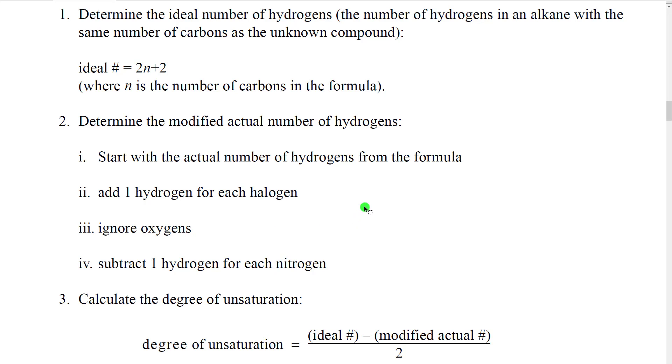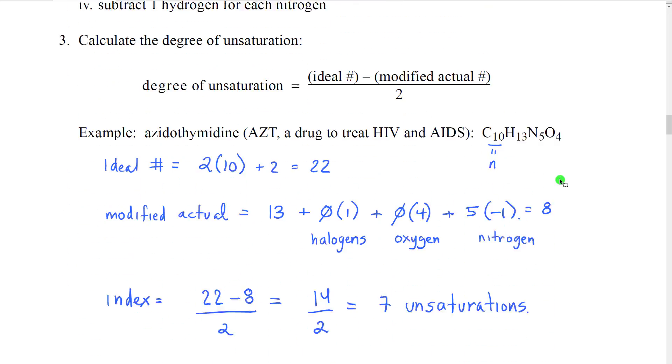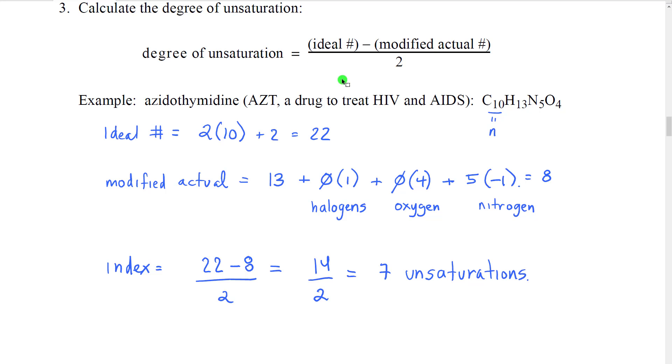We're then going to take these two numbers and do a very simple calculation. The calculation looks like this. We're first going to determine how many hydrogens is the actual formula missing when compared to the ideal formula. So we're just going to take the difference between those two numbers. Then we're going to say for each two hydrogens that are missing, we have an unsaturation, either a pi bond or a ring. So we're going to take the number of missing hydrogens and divide it by two. That will then tell us how many unsaturations we have in our molecule.